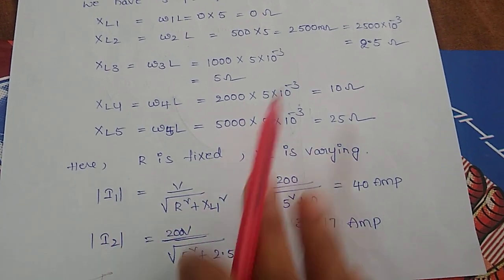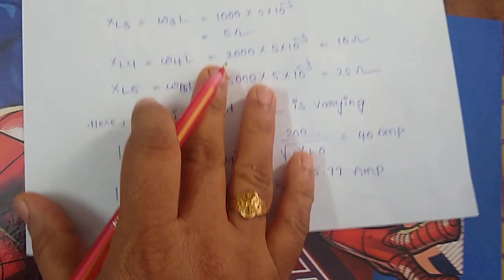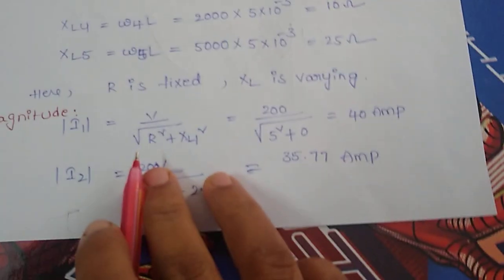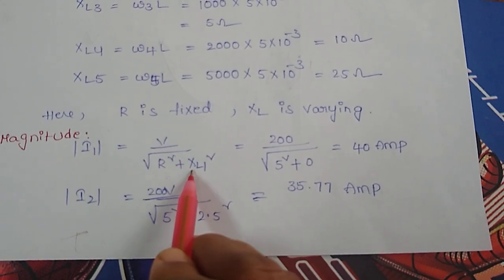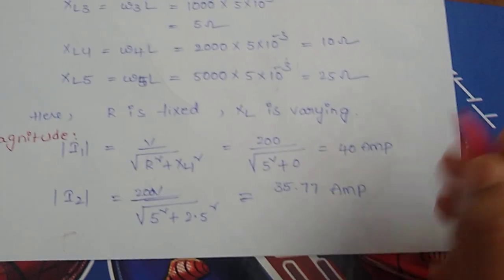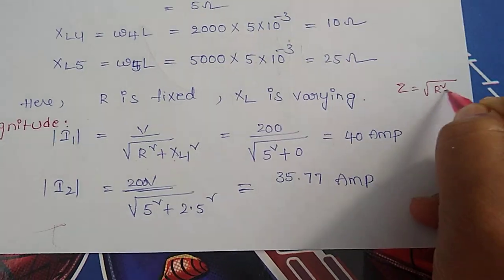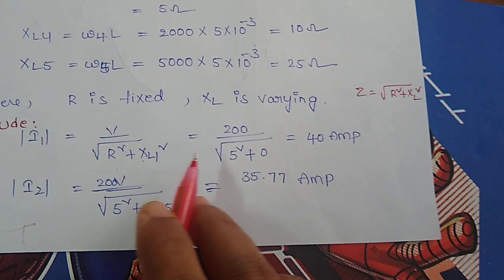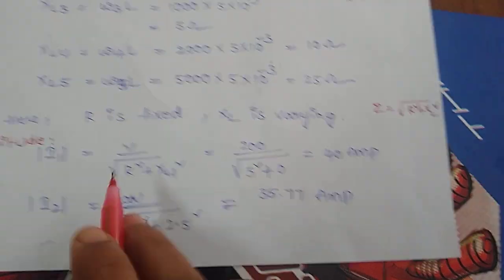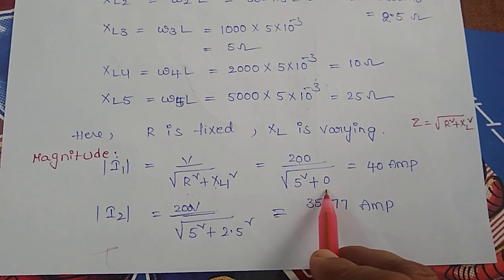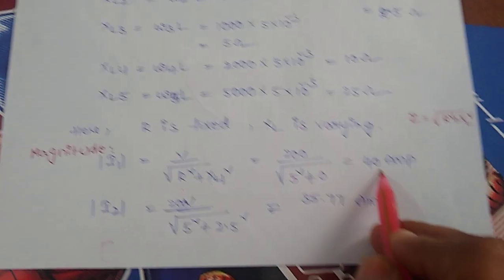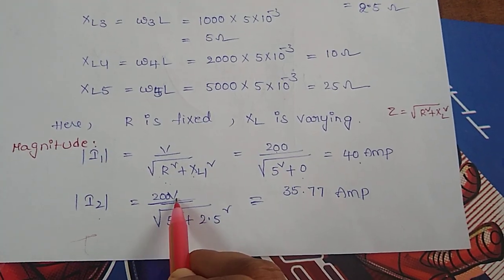First I am going to find the magnitude of current where I1 equals V by Z, where Z equals square root of R squared plus XL squared for RL series circuit. Then I1 equals V by Z, so 200 divided by square root of 5 squared plus 0, which gives 40 amperes.